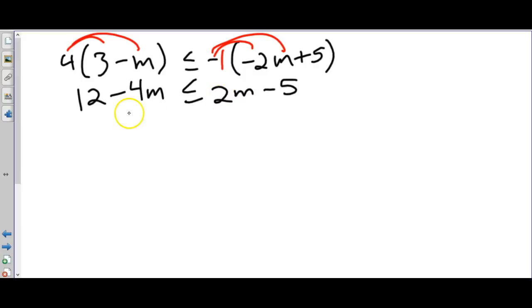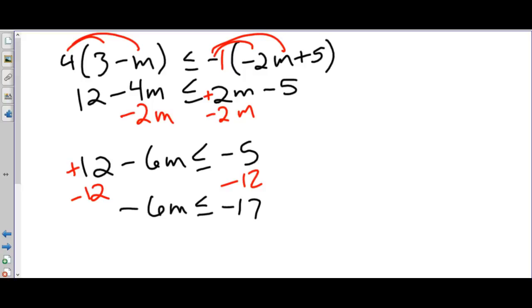So now we have the variables on both sides, now we do our opposites. Again I like to take the right side letter and move it to the left since this is currently positive 2m we're going to minus 2m from both sides. Now we do our opposites with our regular two-step equation. Do the plus or minus first - this is a positive 12 even though there's a minus between the 12 and the 6m, we always look at the sign in front of the number we're moving. So we want to minus 12 from both sides, giving you negative 17.